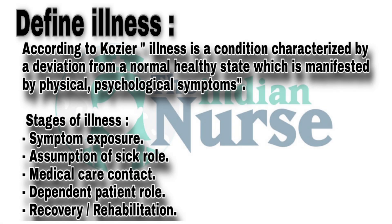Define illness. According to Causier, illness is a condition characterized by a deviation from a normal healthy state, which is manifested by physical and psychological symptoms. Stages of illness: symptom exposure, assumption of sick role, medical care contact, dependent patient role, and lastly, recovery or rehabilitation.